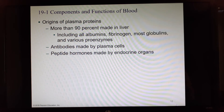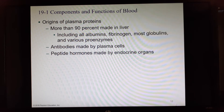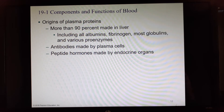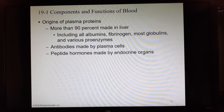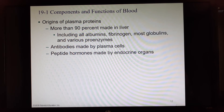More than 90% of plasma proteins are created in the liver, which performs about 500 jobs in your body — making albumins, fibrinogen, most globulins, and many proenzymes. A proenzyme is an inactive enzyme activated by another enzyme. Antibodies can also be made by plasma cells of the immune system, and peptide hormones are made by endocrine organs — those did not come from the liver.